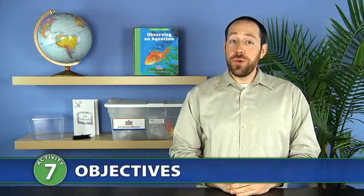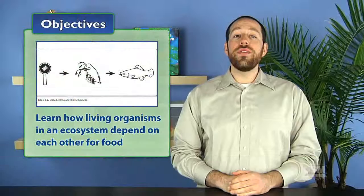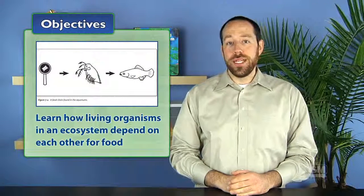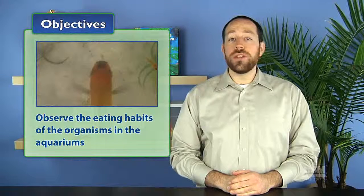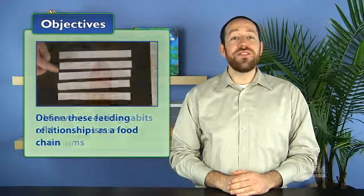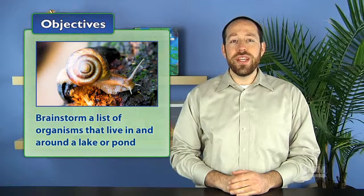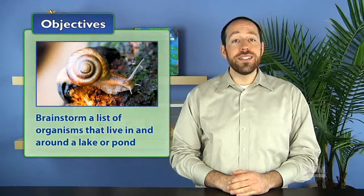In activity seven, food chains, students learn how living organisms in an ecosystem depend on each other for food. Students observe the eating habits of the organisms in the aquariums and define these feeding relationships as a food chain. Then they brainstorm a list of organisms that live in and around a lake or pond and discuss what they eat.